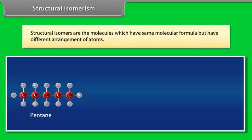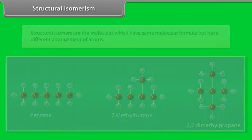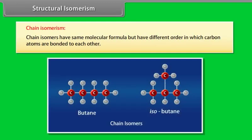Structural isomers are the molecules which have the same molecular formula but have different arrangement of atoms. Chain isomers have same molecular formula but have different order in which carbon atoms are bonded to each other.